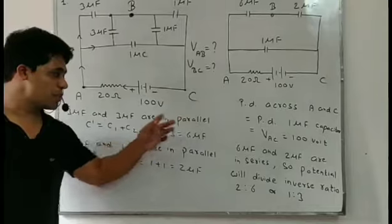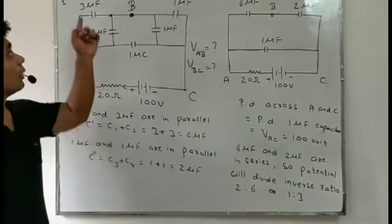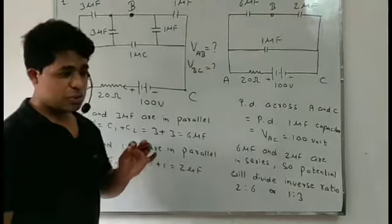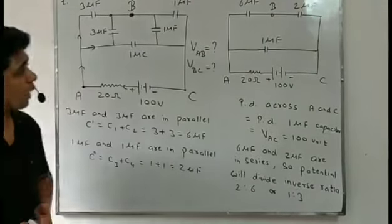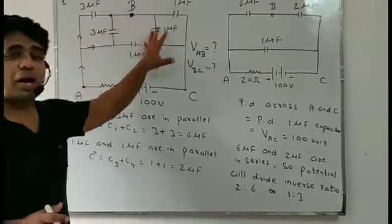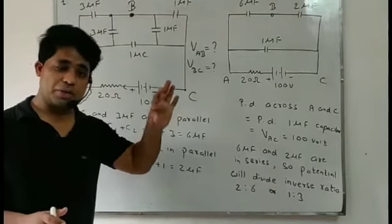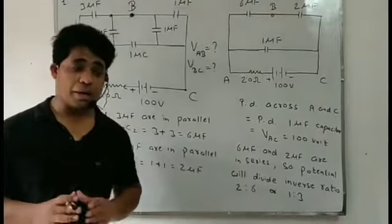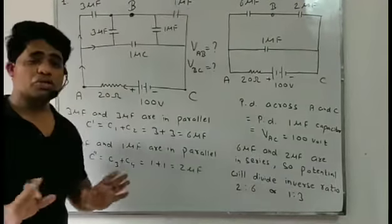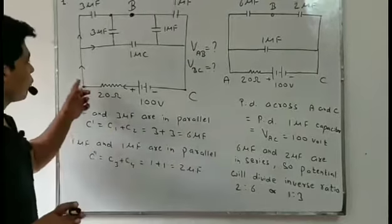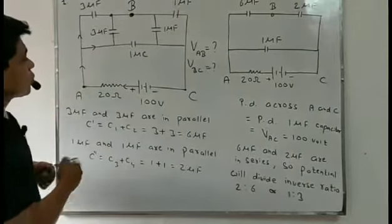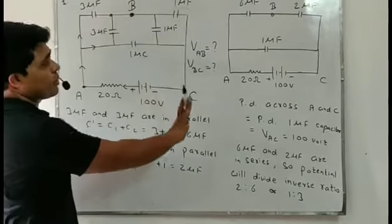We know what is total capacitance in parallel combination: C1 plus C2. Three plus three becomes 6 microfarad. Before starting, I will tell you — we are also given in this question that the circuit is in steady state. It means all the capacitors are charged, and there will be no current flowing.